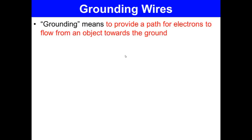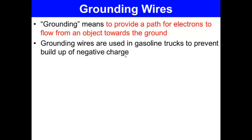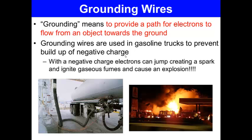Plus one coulomb means an object has lost electrons. One negative coulomb means the object has gained electrons. Grounding means to provide a path for electrons to flow from an object towards the ground. Grounding wires are used in gasoline trucks to prevent a buildup of negative charge, which could cause an explosion. With a negative charge, electrons can jump, creating a spark, and ignite gaseous fumes and cause an explosion. So that would be bad, which is why we need these grounding wires.